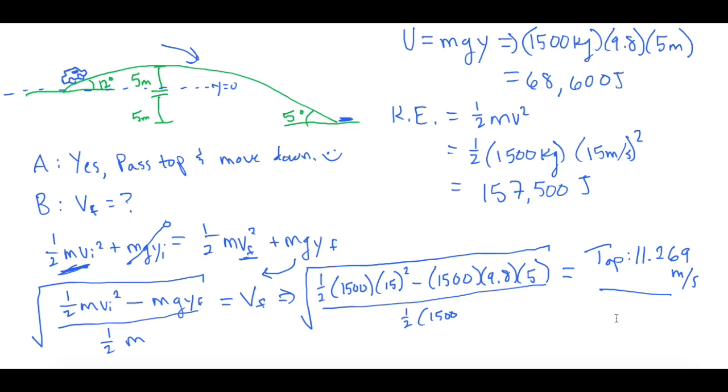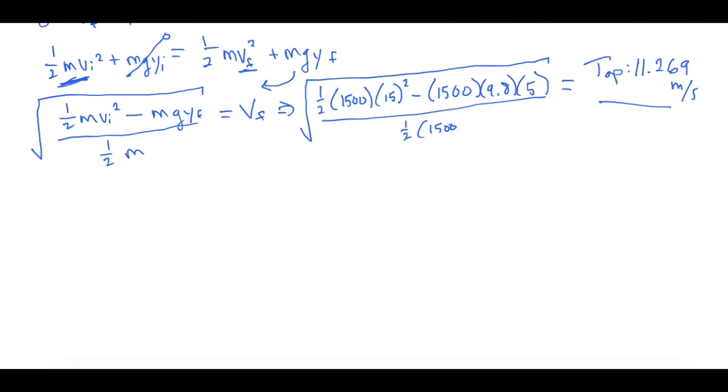But we don't want the top, of course. We know we want the bottom. So now let's do another one of these equations right here to solve for the bottom of the hill. So if we do that, we're going to say we have 1 half mv initial squared plus mgy initial equals 1 half m v final squared plus mgy final.